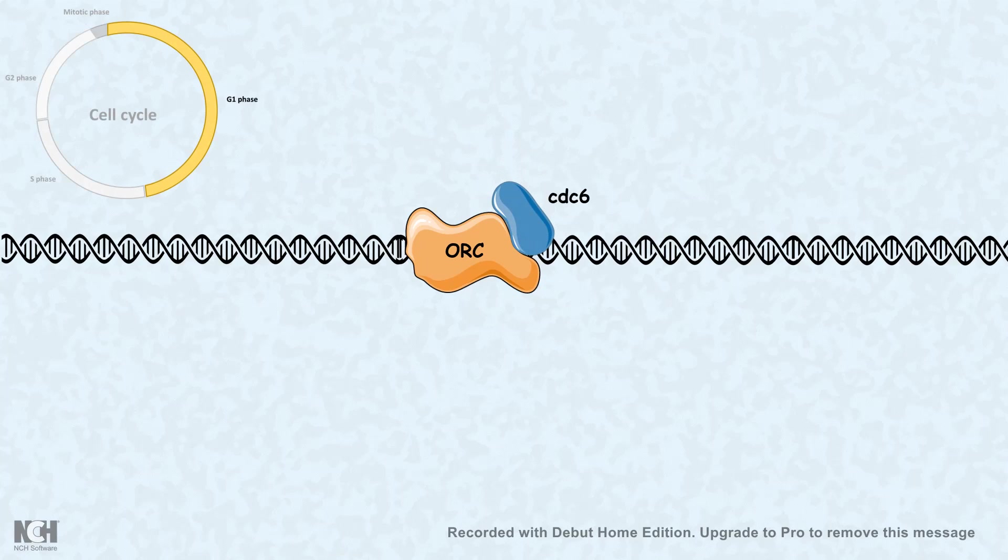Several components, such as CDC6, CTD1, all of these get associated with the ORC complex. Along with that, MCM helicases get associated.